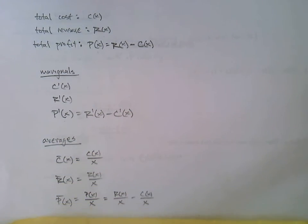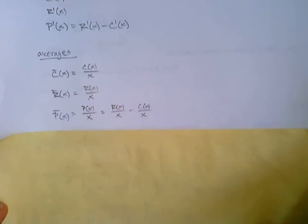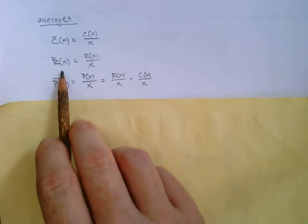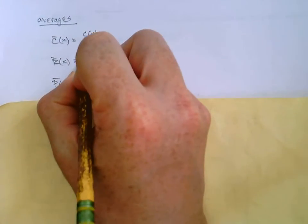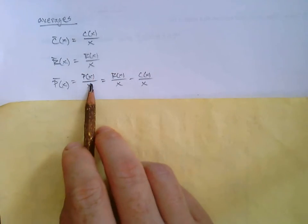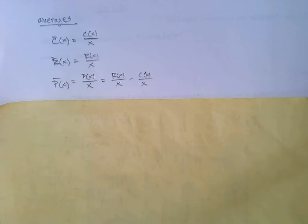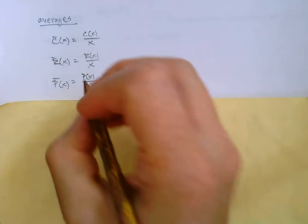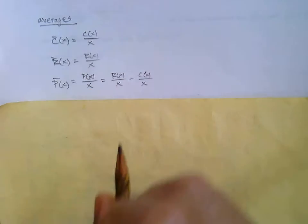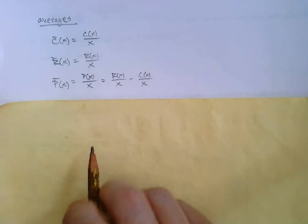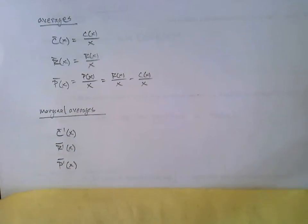And there are the averages, so there's average cost, average revenue, and average profit. How much money are you profiting per unit might be good to know. And you could again think of that as R(x) over x minus C(x) over x.